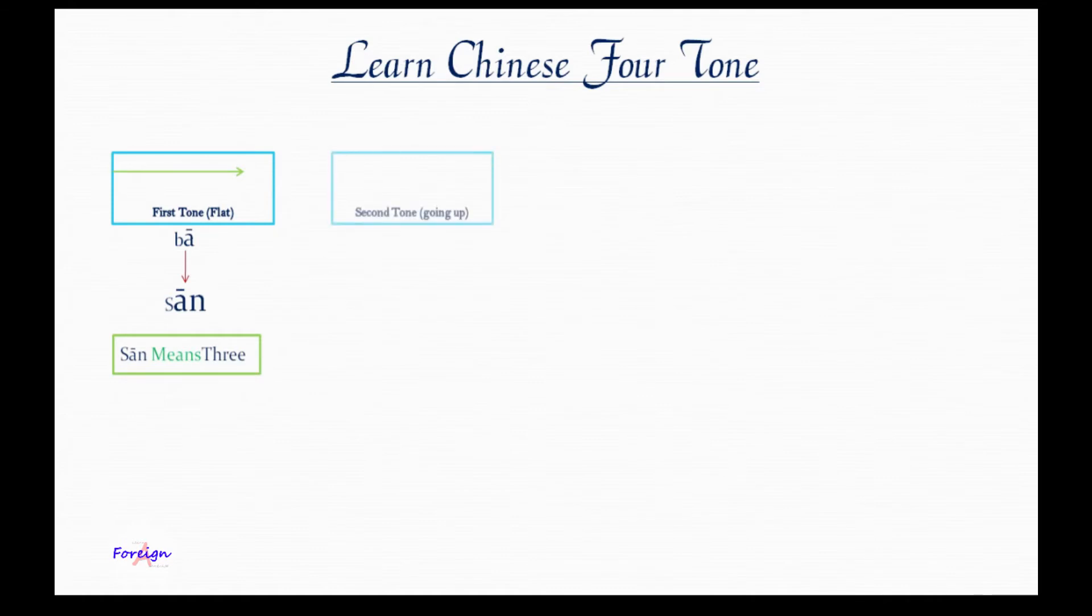Second tone we use going up, because when we try it, it will go down to up. A little example: ba, ba. See above the 'a', it's down to up line. So we call it ba, ba.